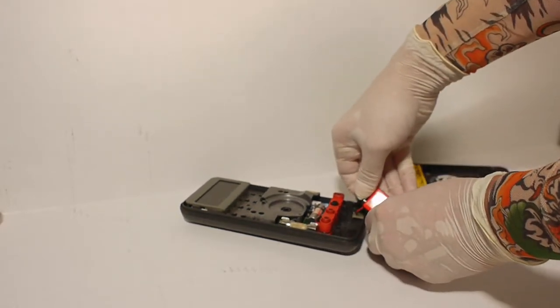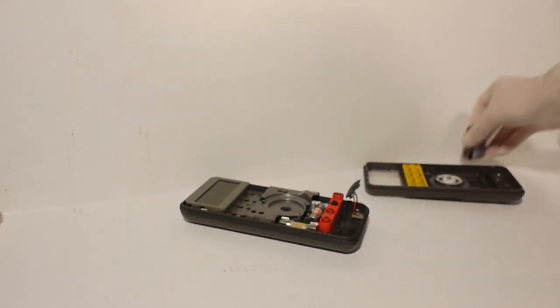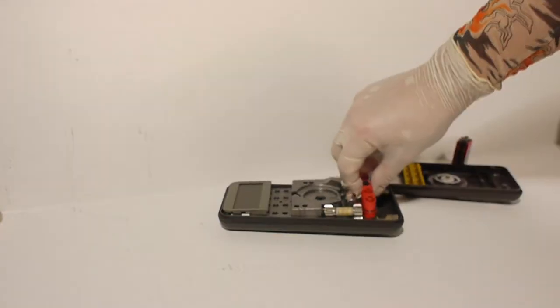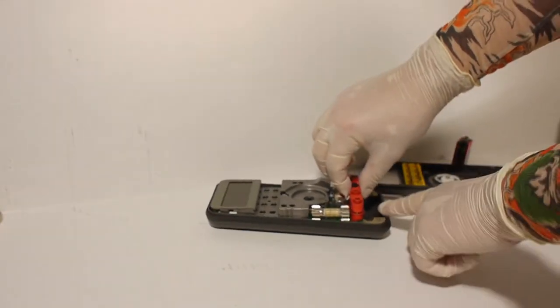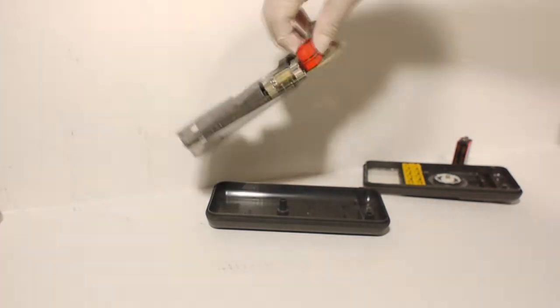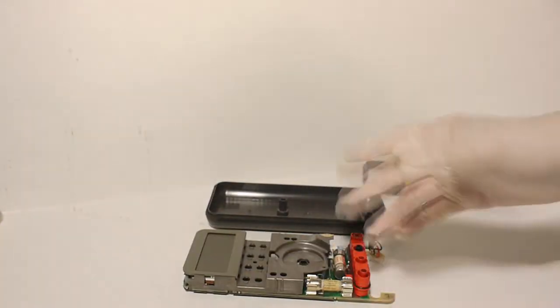Step number three: remove the nine volt battery. Step number four: lift the PCB out of the bottom case by lifting up on the input connector.